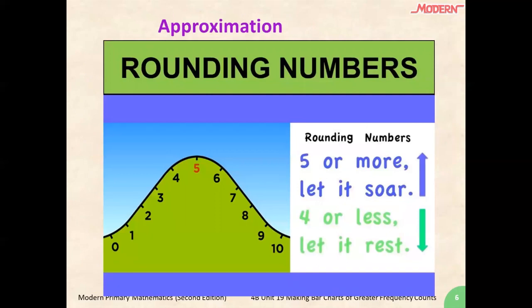Now, before we continue, let's review how we round numbers. First, we need to look at the digit after the mentioned place. If the number is between 1 to 4, you will have to round down and the mentioned place doesn't change. If the number is equal to or larger than 5, you will have to round up and add 1 to the mentioned place.